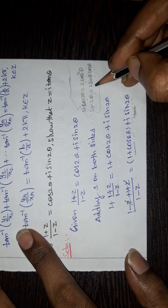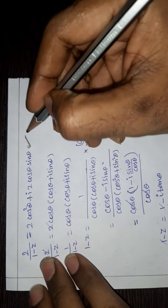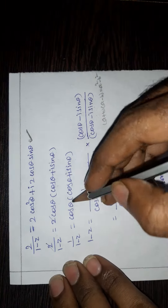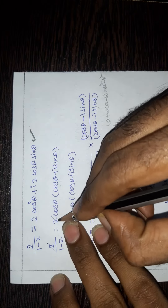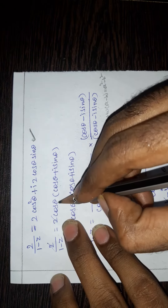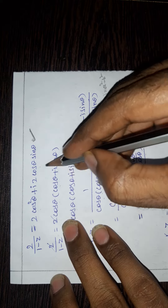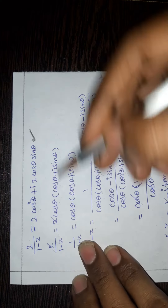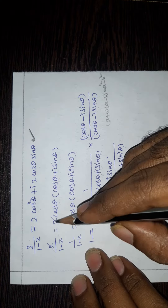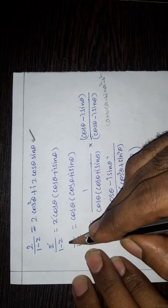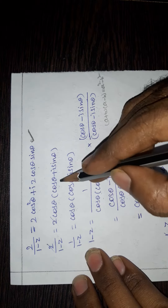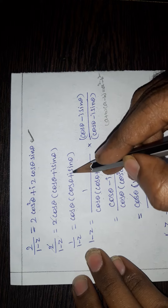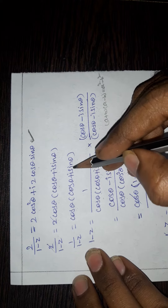Taking 2cosθ as common factor on the right side: 2 / (1 - z) = 2cosθ·(cosθ + i·sinθ). The 2s cancel, giving 1 / (1 - z) = cosθ·(cosθ + i·sinθ).